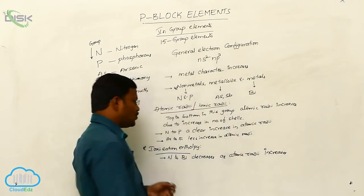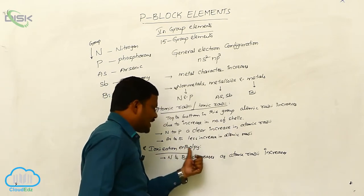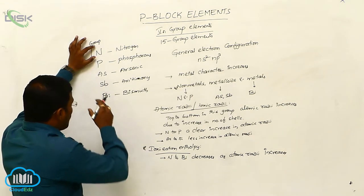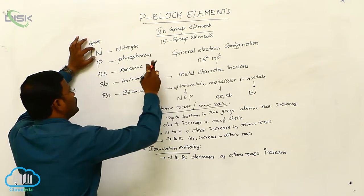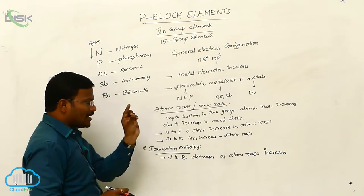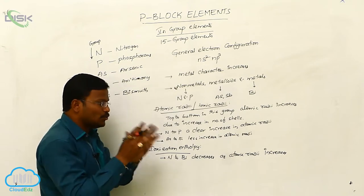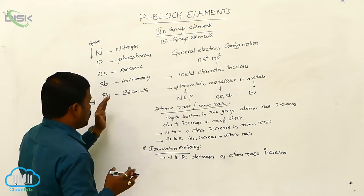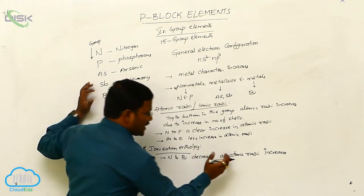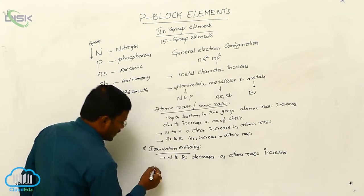Due to increase in atomic radii from nitrogen to bismuth, ionization enthalpy values decrease. Among the five elements of the 15th group, nitrogen has the least atomic radii. When atomic radii is small, a huge amount of energy is required to eliminate an electron from the outermost orbit, so nitrogen shows a high ionization enthalpy. Hence, from top to bottom, due to increase in atomic radius, ionization enthalpy decreases.